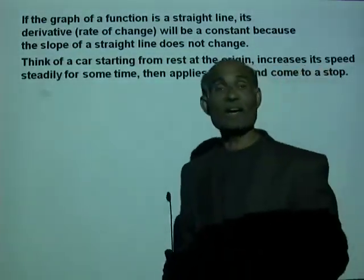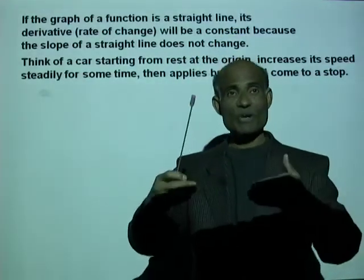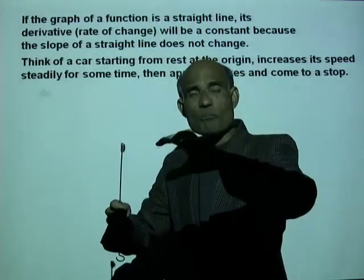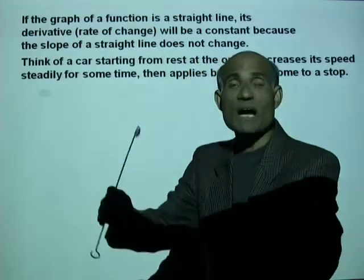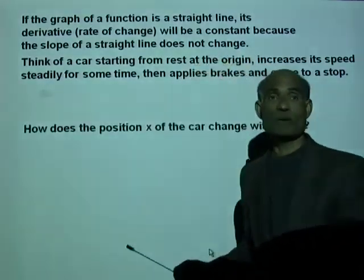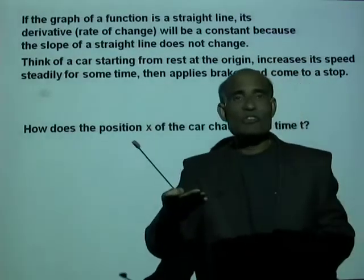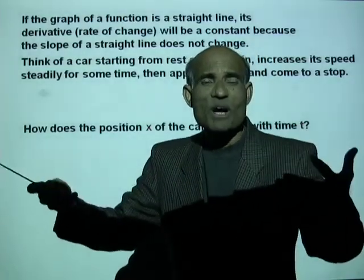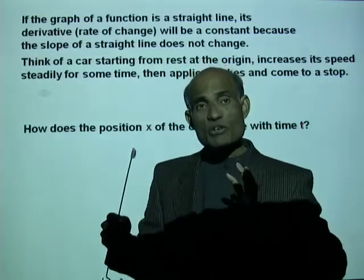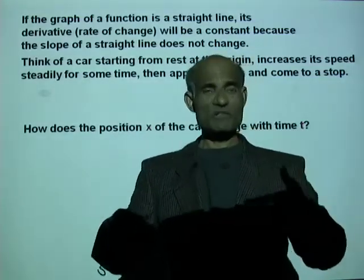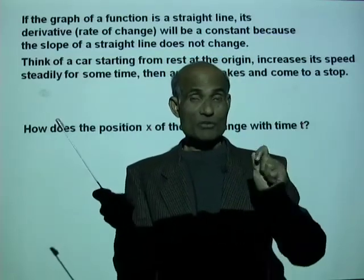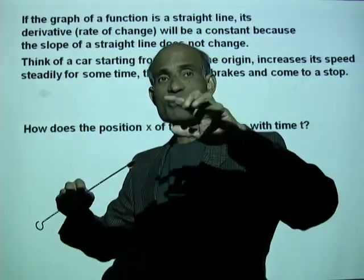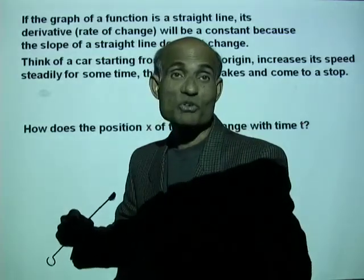Now think of a car that starts from rest, then increases its speed for a while, then applies brakes, slows down, and comes to a stop. How does the position x of the car change with time? You start from a green light, put your foot down, the speed increases — then ahead you see a red light, you apply brakes and reduce the speed.